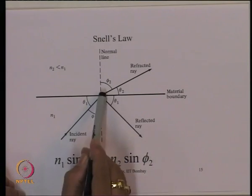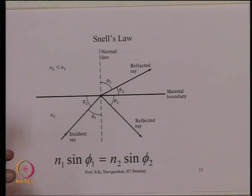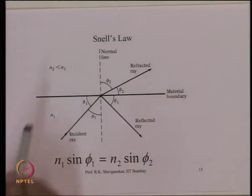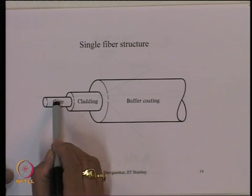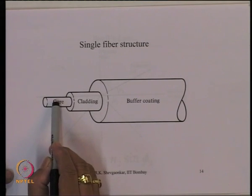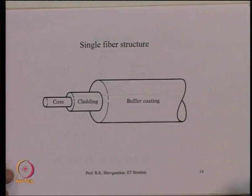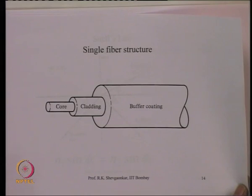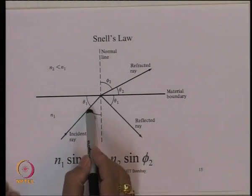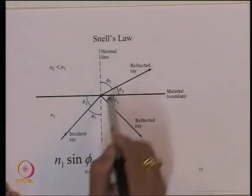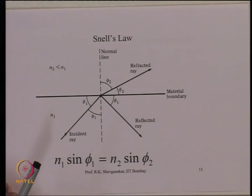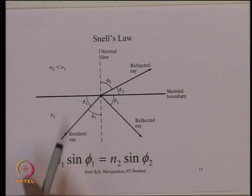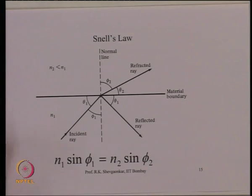For total internal reflection, two conditions must be satisfied. First, the refractive index of the core must be higher than that of the cladding. Second, the angle φ1 at the core-cladding interface must be greater than the critical angle. Only then will there be total internal reflection at the core-cladding boundary and sustained propagation of light.